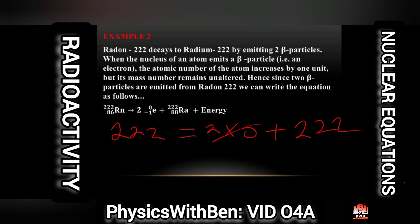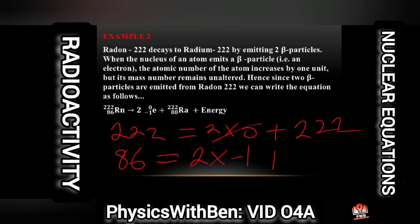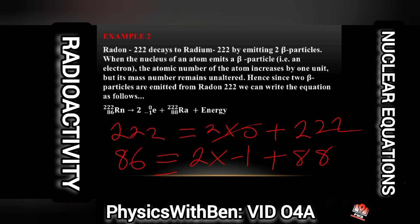For the atomic numbers: 86 equals 2 times (−1) plus 2 times (−1) plus 88. So 2 times (−1) gives minus 2. You have minus 2 plus 88, and 88 minus 2 gives 86. So you have 86 on this side and 86 on the other side. The nuclear equation is also balanced.